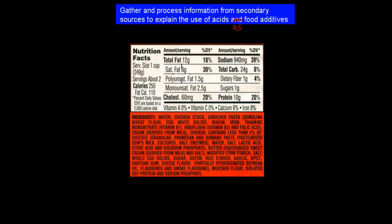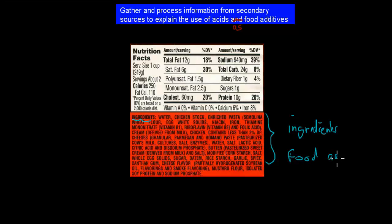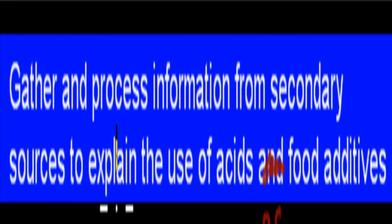You might have looked at the back of a food label before and seen a really big list — the ingredients list, which we can also call the food additives list. Food additives are things that you add into food to give it a different type of flavor or property. The dot point says gather and process information from secondary sources to explain the use of acids as food additives, so we need to cover the reasons why we use acids as food additives.